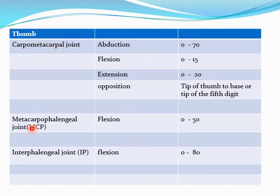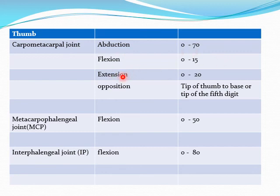For the hand: carpometacarpal joint, metacarpophalangeal joint, and interphalangeal joint. At the carpometacarpal joint, movements are abduction, flexion, extension, and opposition. Abduction: 0 to 70 degrees. Flexion: 0 to 15 degrees. Extension: 0 to 20 degrees. Opposition: tip of thumb to base or tip of the fifth digit. Metacarpophalangeal joint, flexion: 0 to 50 degrees. Interphalangeal joint, flexion: 0 to 80 degrees.